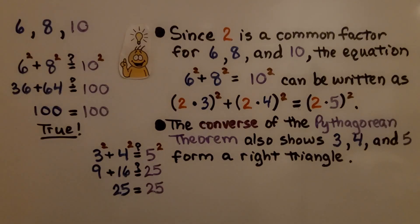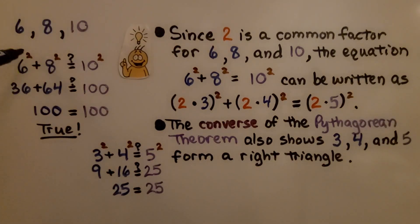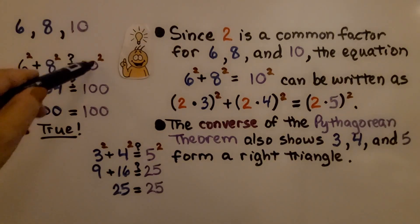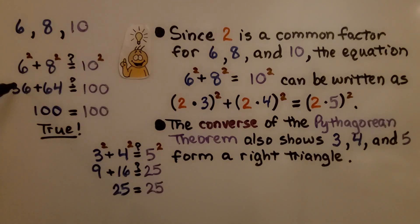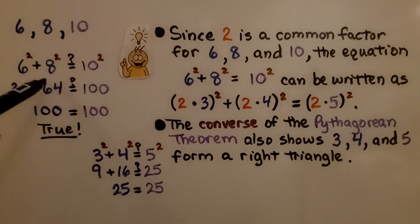Here we have the three side lengths of 6, 8, and 10. We can do 6 squared plus 8 squared, is it equal to 10 squared? Well, 6 times 6 is 36, 8 times 8 is 64, 10 times 10 is 100. When we add 36 plus 64, we get 100. So yes, this is true.